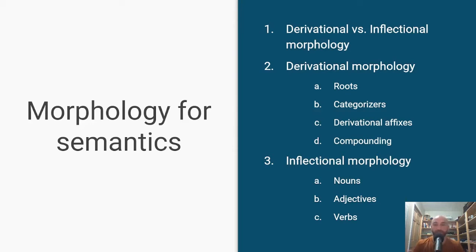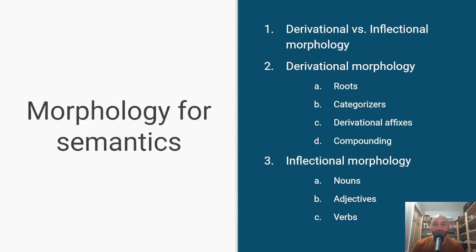We will begin by discussing derivational versus inflectional morphology, which frames our entire discussion — those are the two basic categories in morphology. Within derivational morphology, we'll discuss roots, categorizers, derivational affixes, and compounding. That will be basically part one. In part two, we will look at inflectional morphology on nouns, adjectives, and verbs, and then we'll conclude.